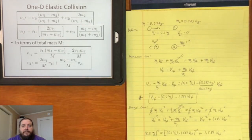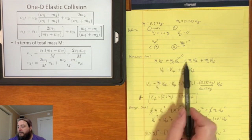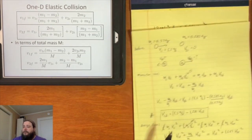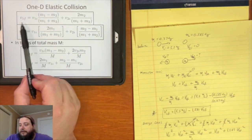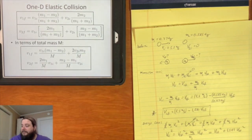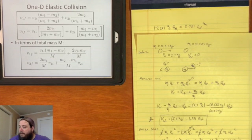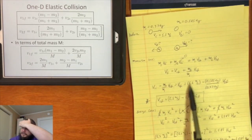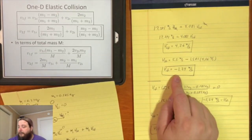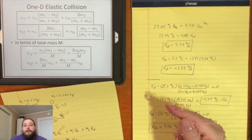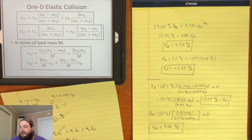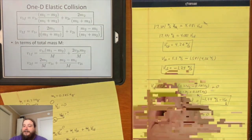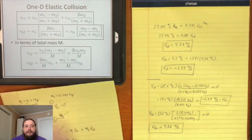Sometimes these formulas are simpler than working through the full derivation; sometimes it's not worth the effort — you can always just remember to conserve momentum and conserve energy. Be careful about the sign of velocities: pluses and minuses are important. If a final velocity comes out negative, it means the object moves in the negative direction, and you must plug it in as a negative number.